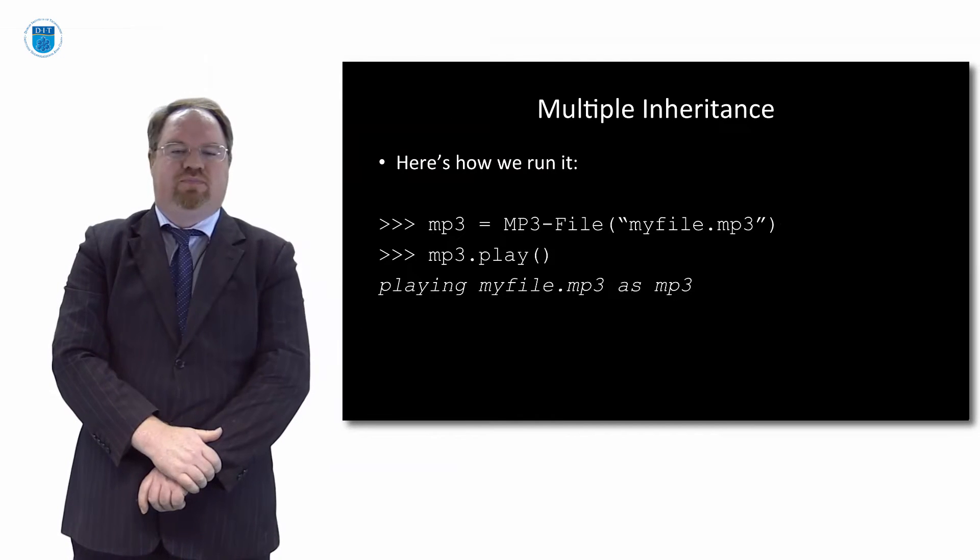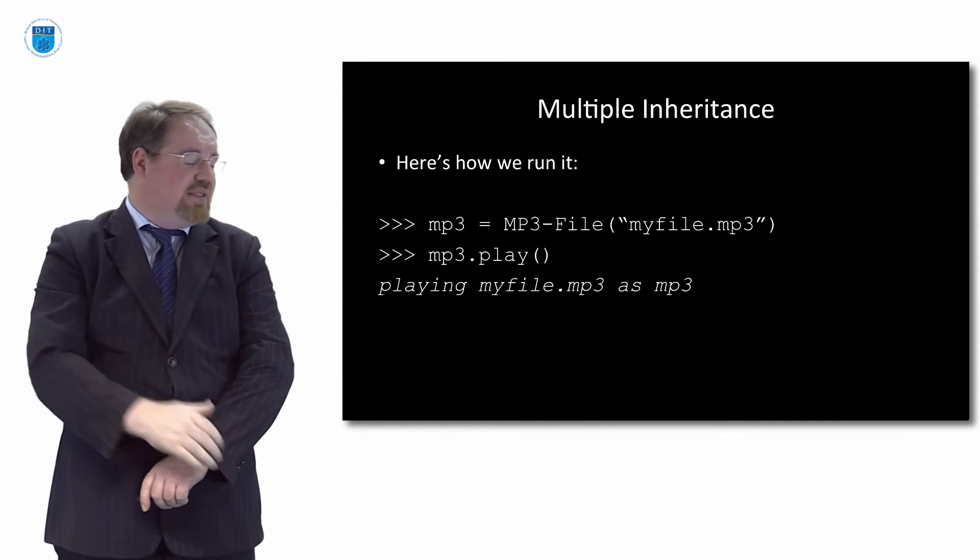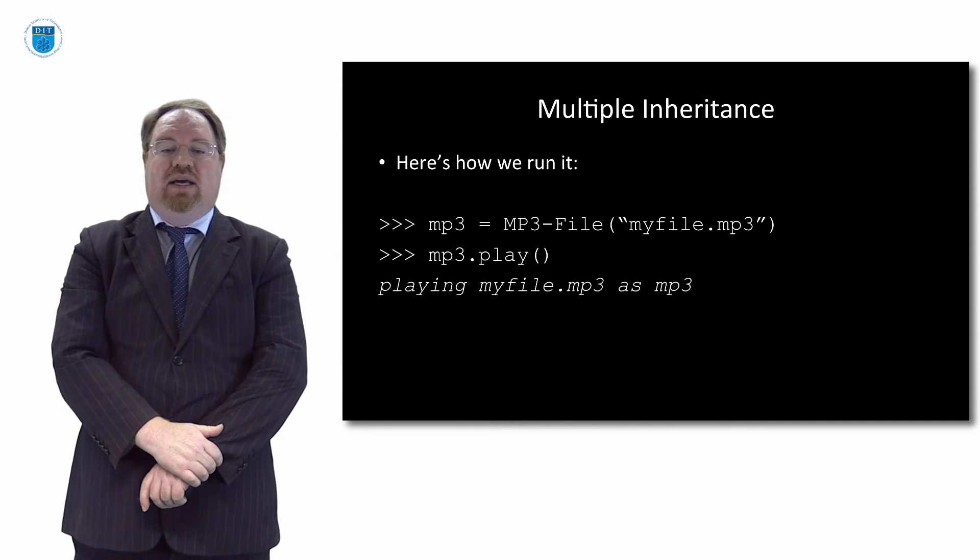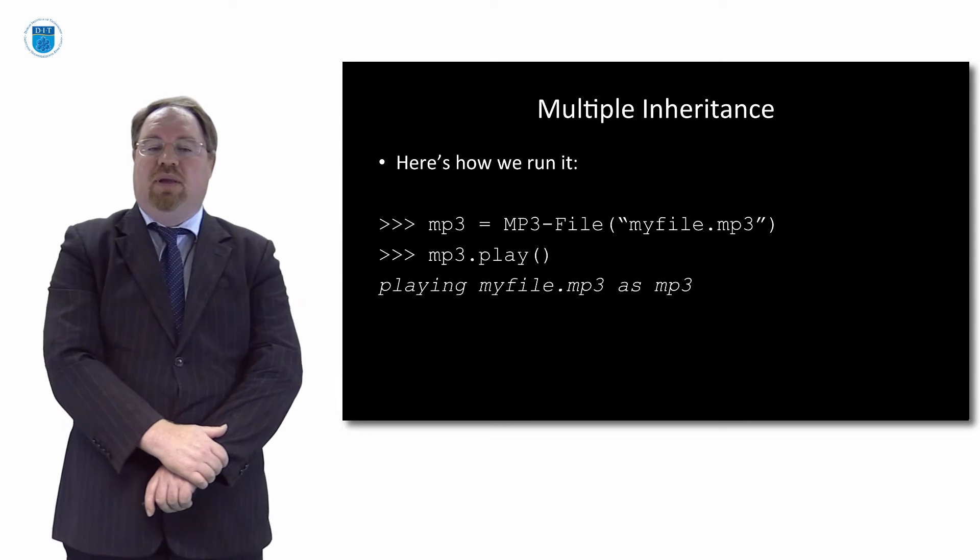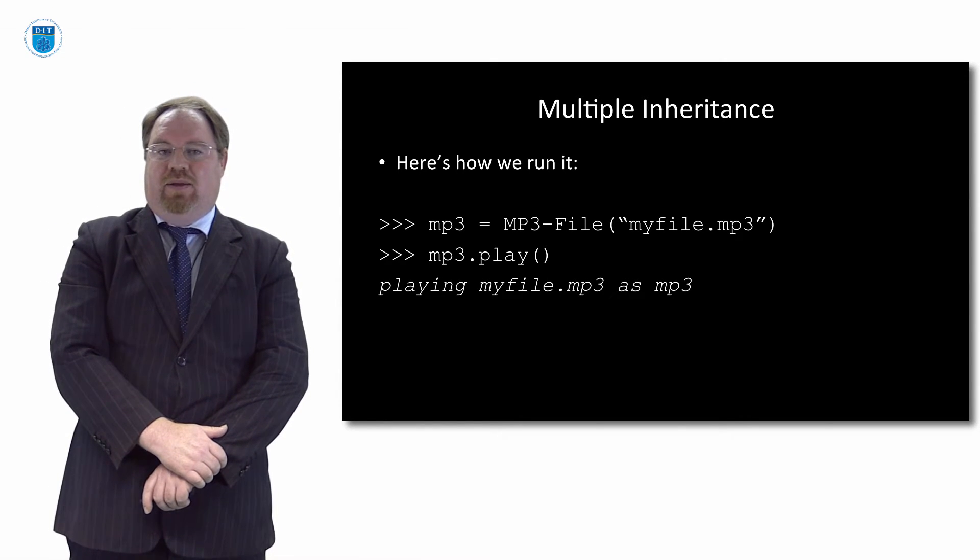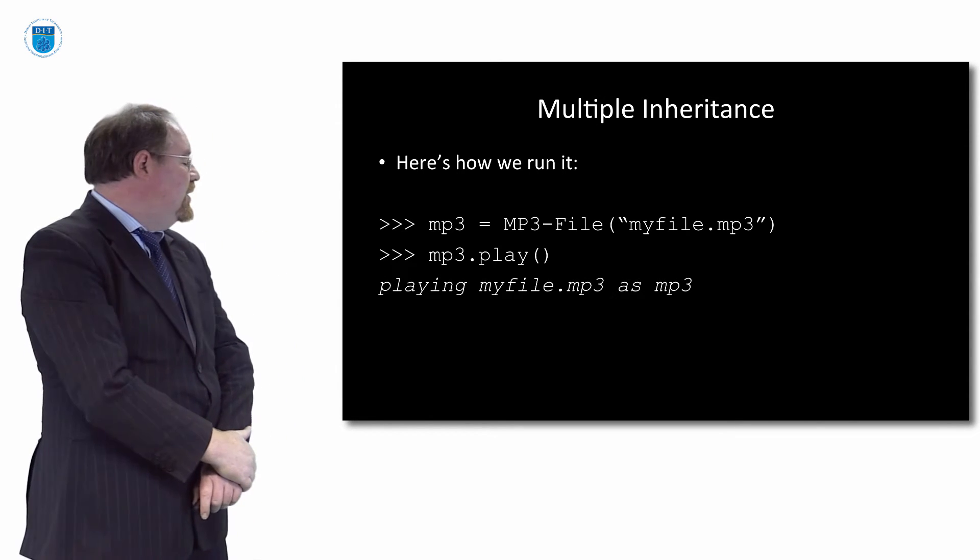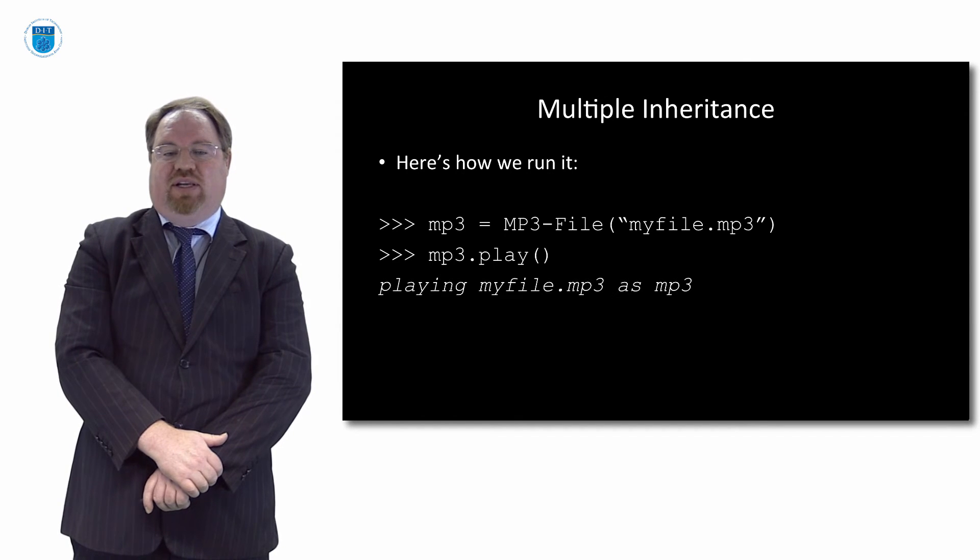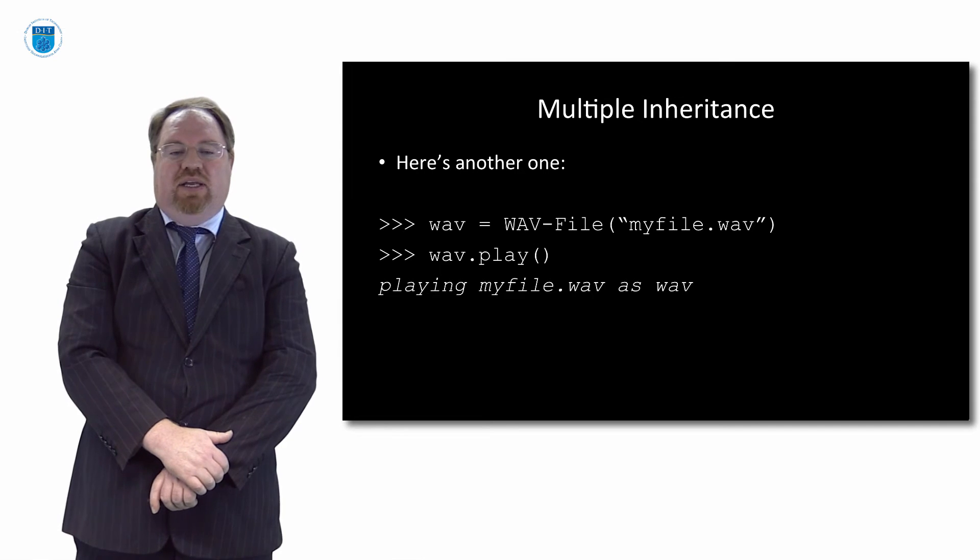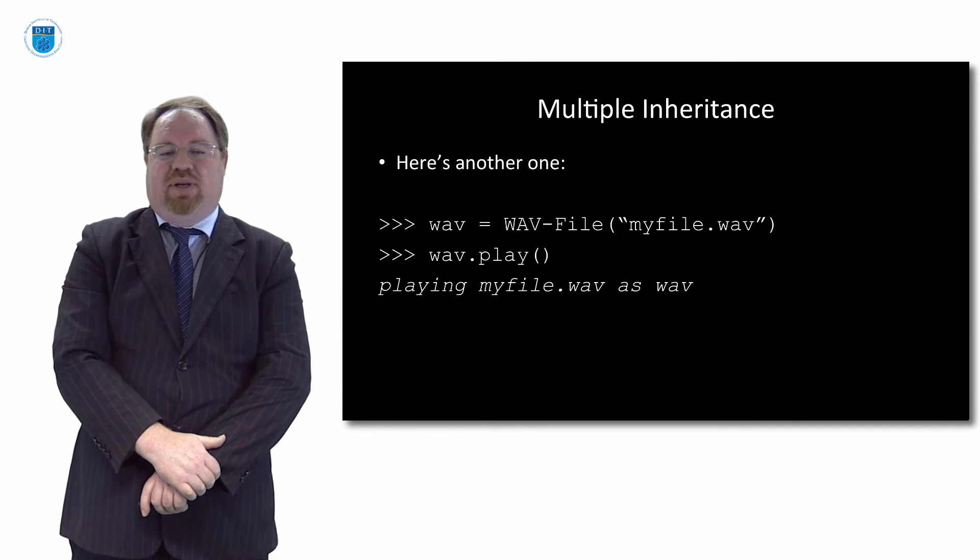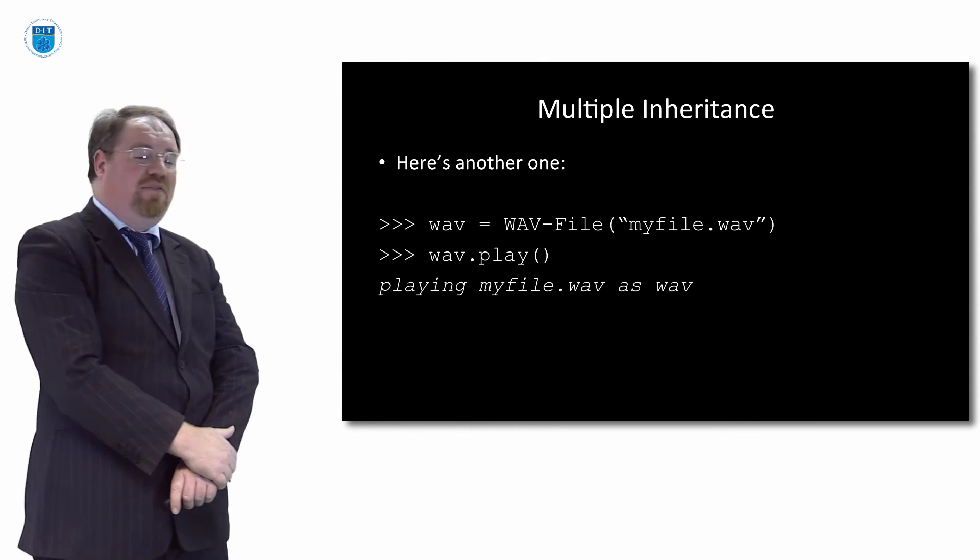Now, how does this run? If I create a file that's called MP3, and it's an instance of the MP3 file class, and the filename is myfile.mp3, and then I say MP3.play, it knows to go to the MP3 file class, and it says playing the filename as MP3, which is correct. If I do the same with the wav, all I need to do is say wav.play. As long as you know what the extension is, it's .wav file, it'll play it as a wav.